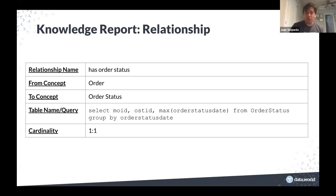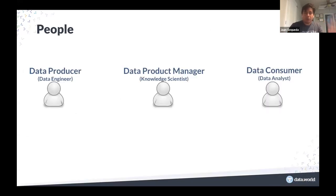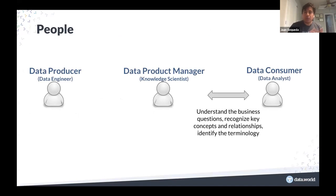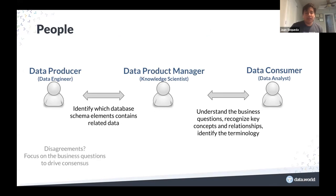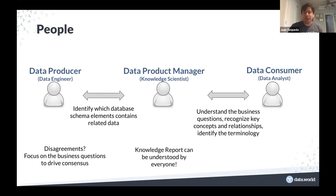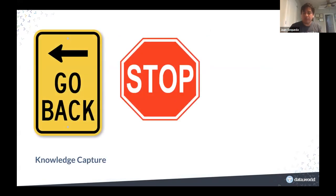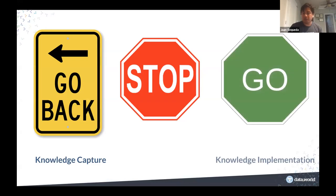Once you create this knowledge report, the three roles are involved. The knowledge scientist communicates with the data analyst to understand the business questions and works with the data engineers to understand the schema. If there are disagreements, the measure of success is answering that business question, which helps drive consensus. This knowledge report is something that can be understood by everybody. At that point in this iterative approach, you ask: does everybody agree on this report? If not, you go back and stay in this step; if yes, you move forward to the knowledge implementation step.